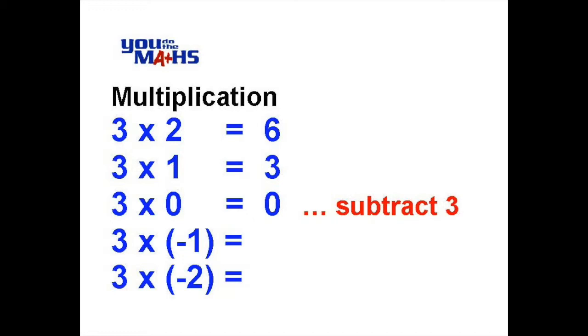So we can continue that pattern of reducing 3 down to the next value where it's 3 multiplied by negative 1. The result here is negative 3, and following on from that, 3 multiplied by negative 2 is equal to negative 6.